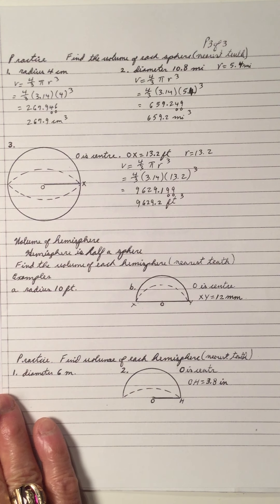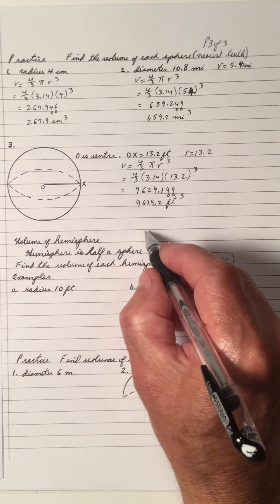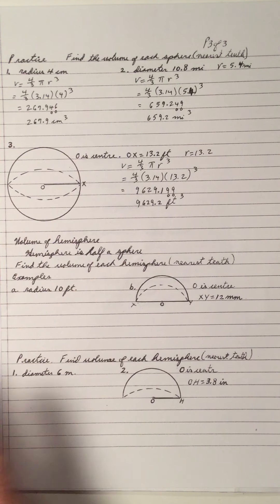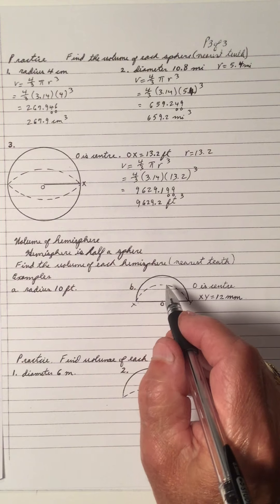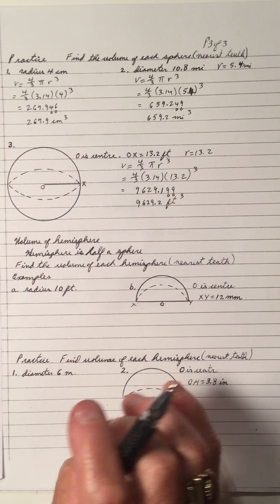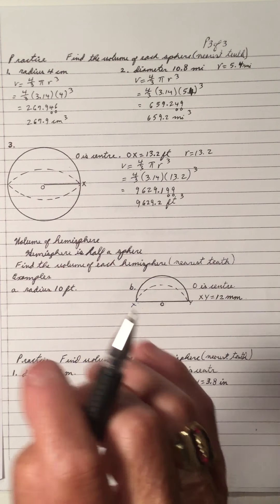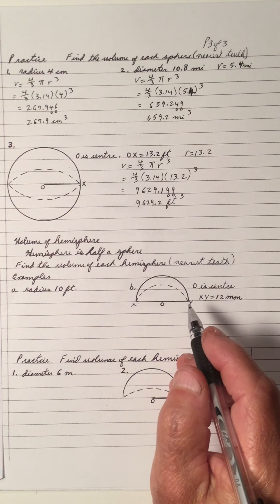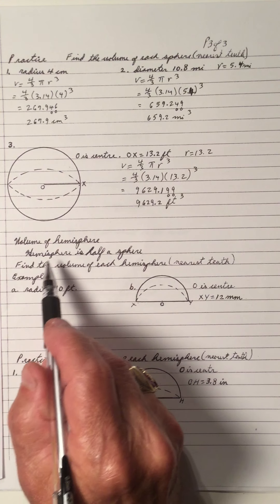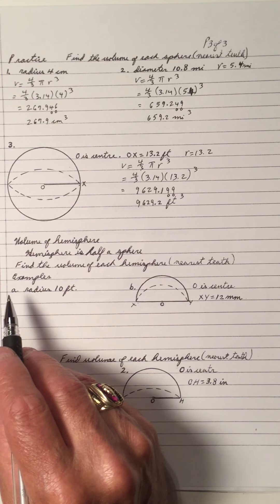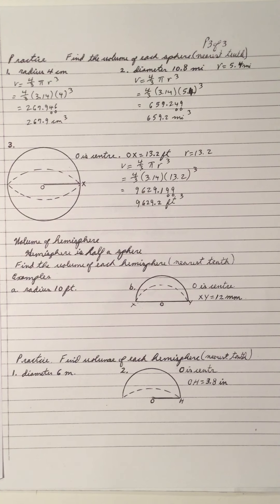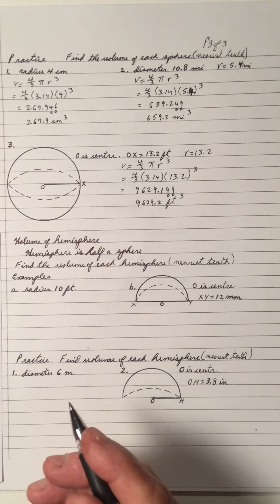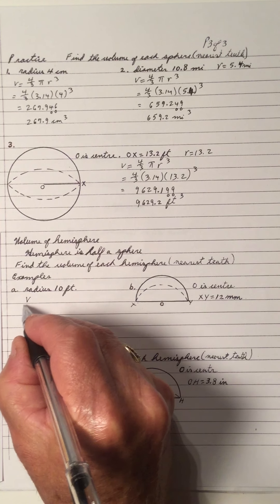Now, what about the volume of a hemisphere? A hemisphere is half a sphere. If you take an orange or a ball and cut it in two, you get the top part — you divide it into two halves, like the northern and southern hemisphere. So the volume of a hemisphere is half the volume of a sphere. I work out the volume of a sphere and then take a half. That way you only need to memorize one formula.